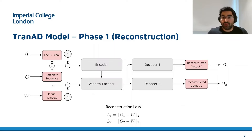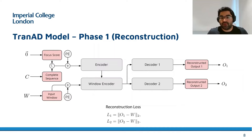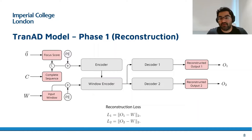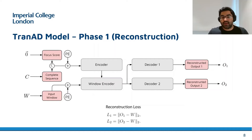The attention module in the window encoder then gives a contextual embedding of this window, where the context is conditioned to the complete sequence embedding. Finally, the contextual window embedding is sent to two decoders to reconstruct outputs.